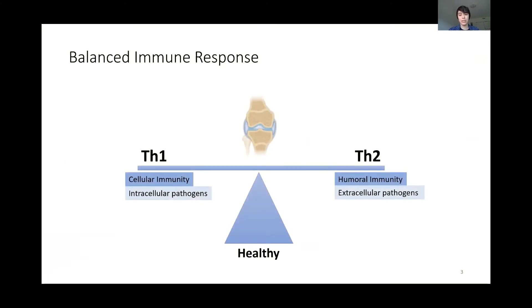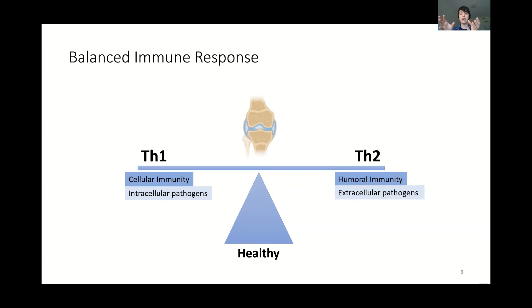To understand that a little better, you first have to understand your immune response. There are two main ways that your immune response works: Th1 and Th2. Th1 is cellular immunity — it's basically the type of immune response that reacts to pathogens such as viruses. Th2 is humoral immunity, which attacks extracellular pathogens such as parasites.